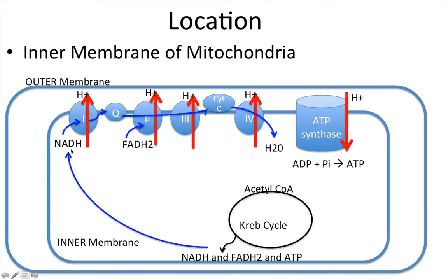Remember those high energy intermediates from the Krebs cycle: NADH and FADH2. Oxidation will occur, and remember oxidation is loss. So NADH is going to lose its electrons and donate them to the electron transport chain.